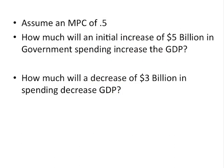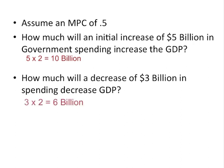Assuming an MPC of 0.5: how much will an initial increase of $5 billion in government spending increase aggregate demand? The spending multiplier is 1 over 0.5 = 2. Multiply 2 by $5 billion = $10 billion increase in aggregate demand. What about $3 billion in spending? $3 billion times 2 equals $6 billion. So if the government spends $3 billion, it multiplies to $6 billion in the overall economy.